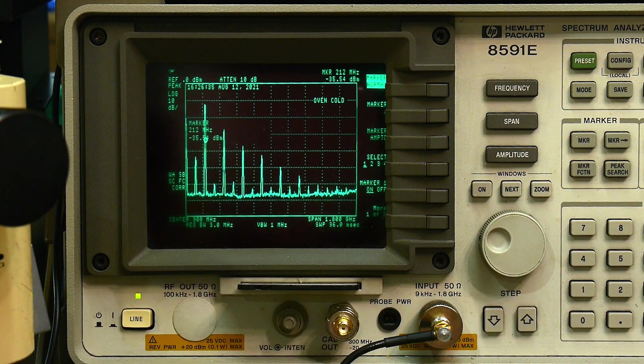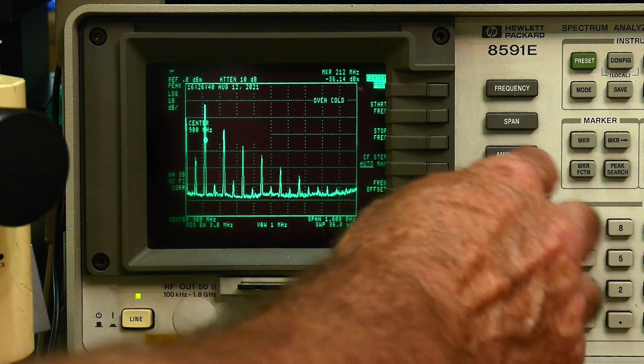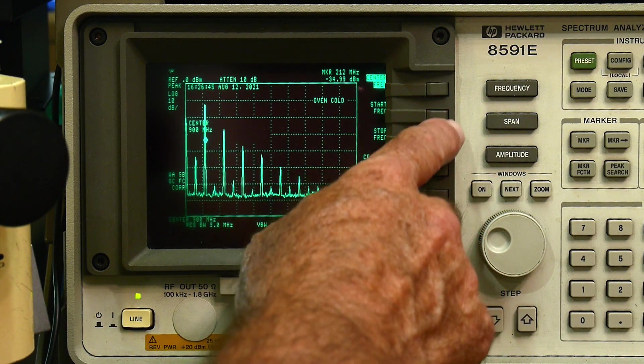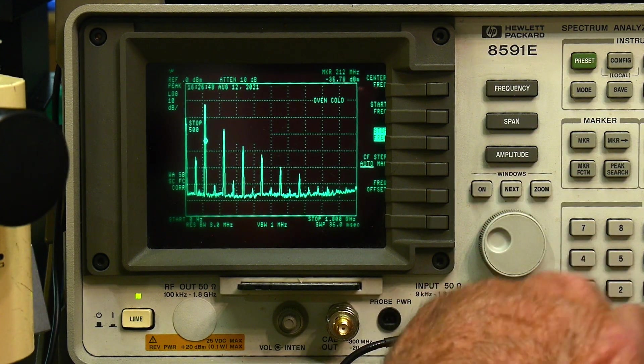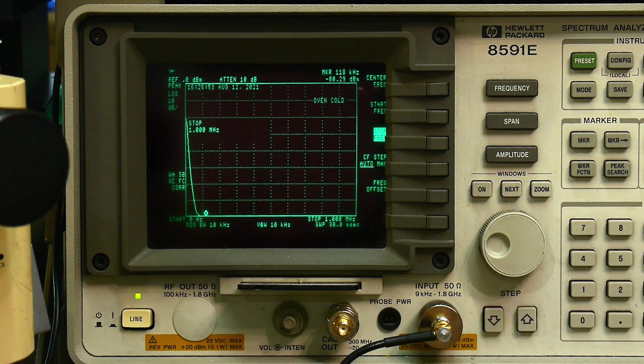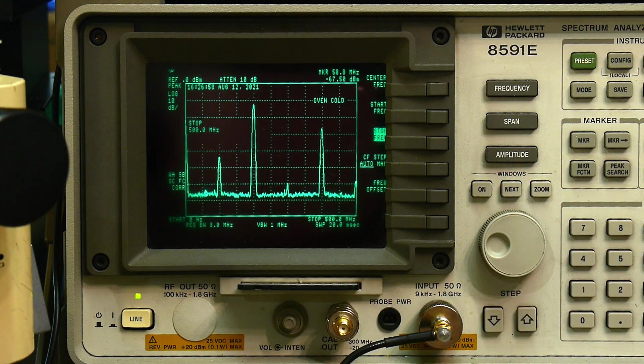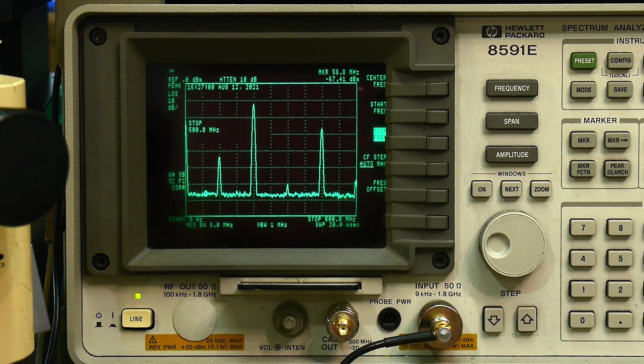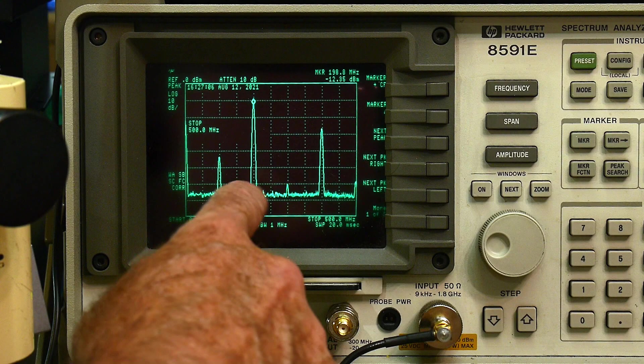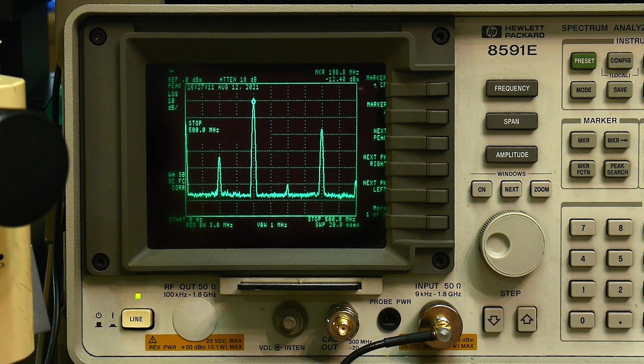So let's do a frequency smaller, let's do a stop frequency of, let's say, 500 megahertz. 500 megahertz, oops, stop frequency 500 megahertz. Alright, so we have the peak search, there's our peak at 200, and we're getting about minus 12 dBm out.